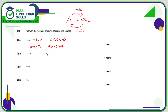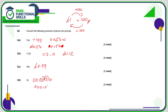112 pence divided by 100: write it as 112.0, move the decimal point two places — that becomes one pound twelve. So if 54 pence is 0.54, then 99 pence is 0.99. Be careful with three pence: write it as 3.0, put some zeros to the left, move the decimal point two positions — that gives 0.03.